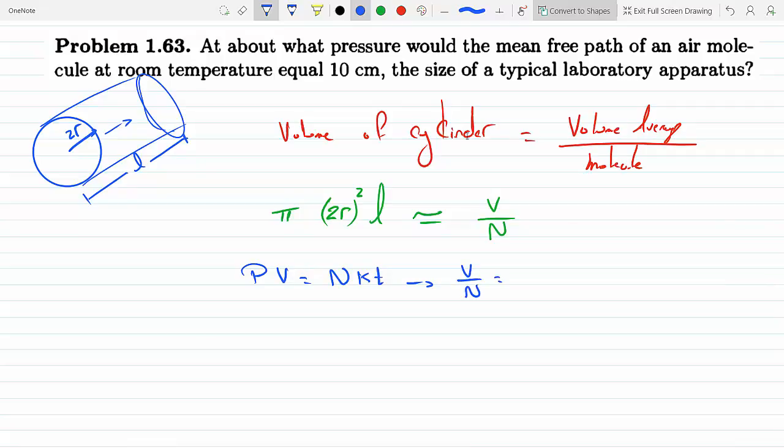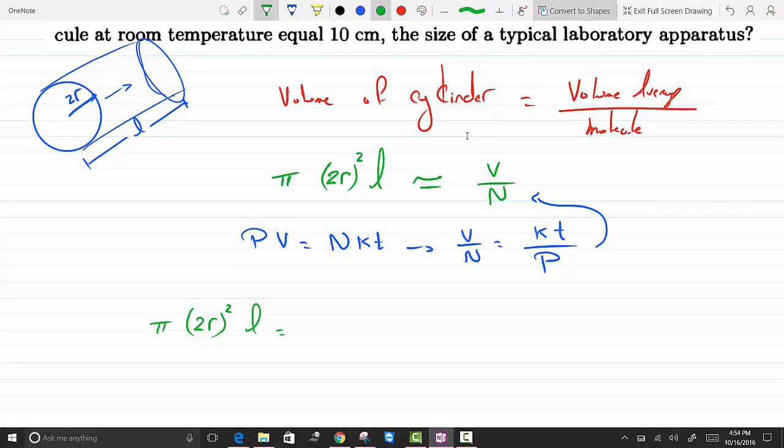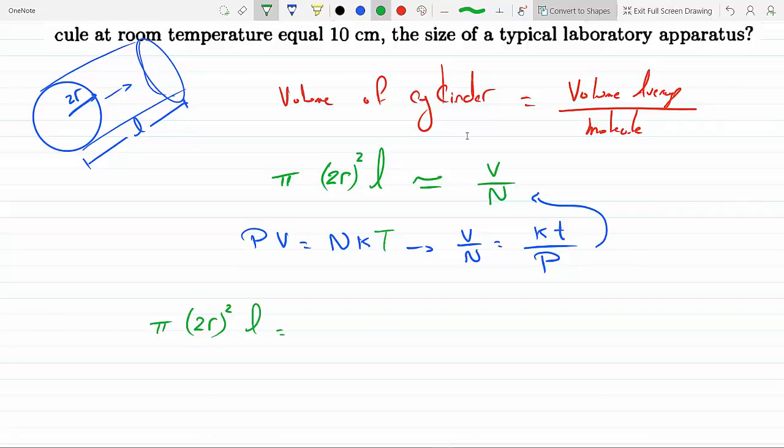So we can replace V over N with κT over P right here in our green equation. And if we do that, we get π(2r)²l equals κT over P. So we would get κ, Boltzmann's constant, temperature over pressure. And that would tell me that pressure would equal κT over 4πr²l.